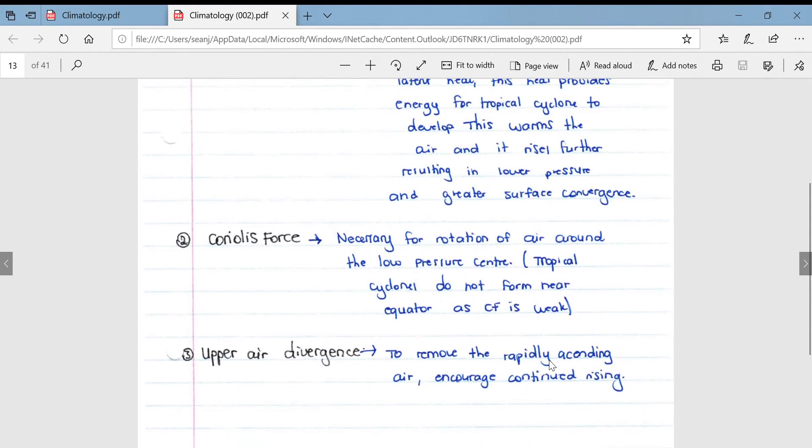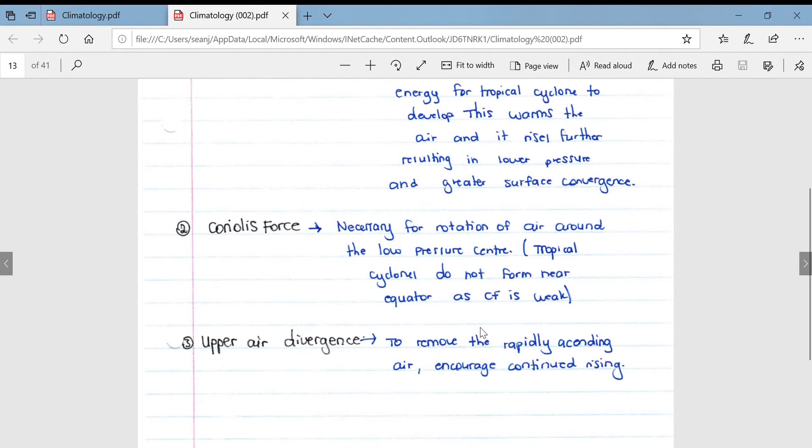Coriolis force. So this is looking at why they're forming between 5 and 20 degrees north and south of the equator as I mentioned earlier. Coriolis force is necessary for the rotation of air around the central low pressure. That's why tropical cyclones do not form at the equator, because the Coriolis force is weak.